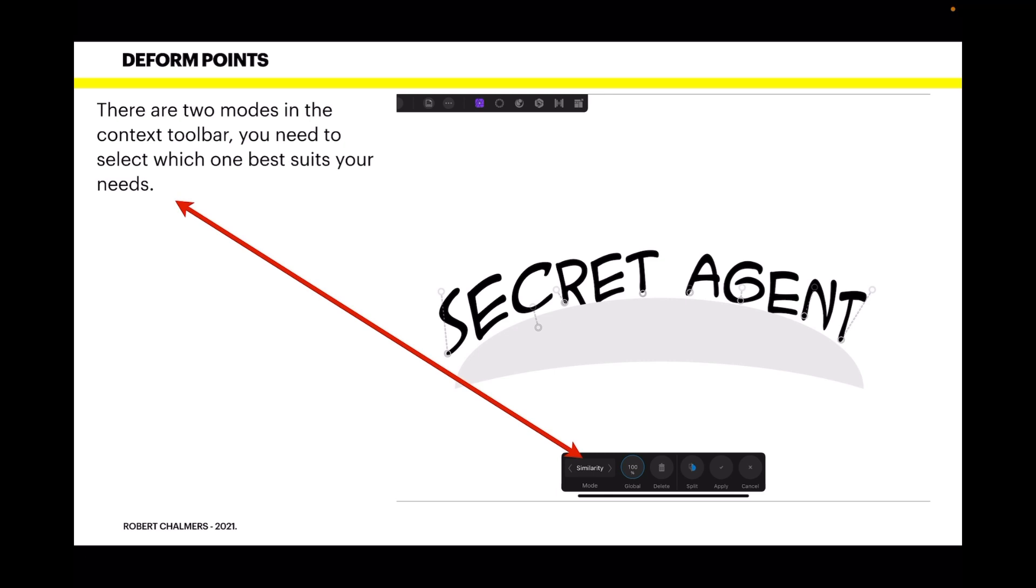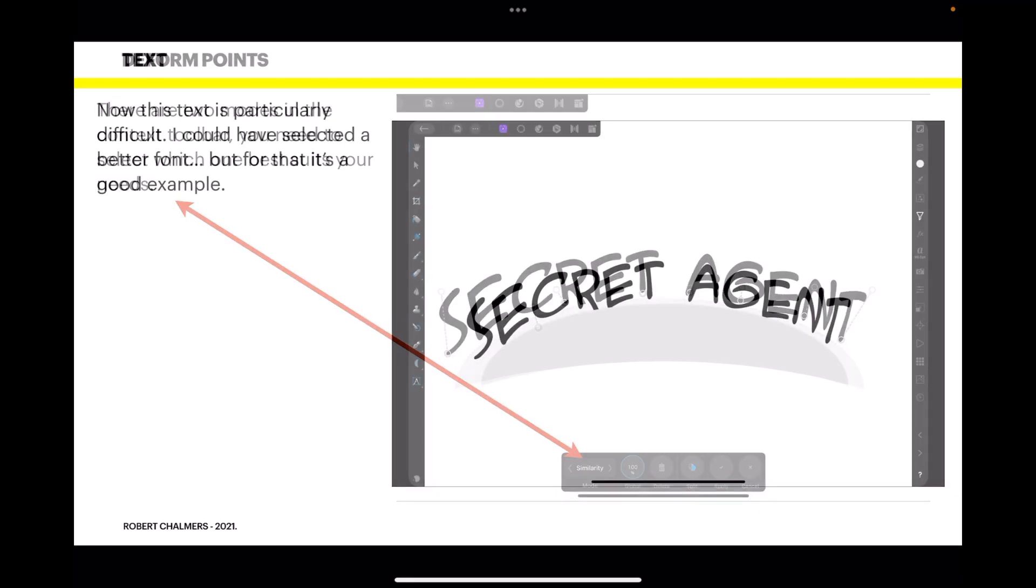And only make small movements, because large movements will dramatically deform the text. Now the good thing here is you'll notice that on that context toolbar the word apply appears. So if you make a total hash of it and you haven't yet tapped apply, don't. Just move off it and it will revert to what it was before. Nothing is permanent in the deform tool until you tap apply. And then it's too late.